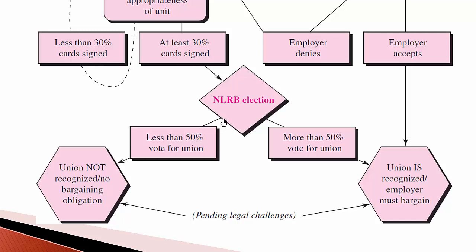There is a 24-hour period before the election in which neither the employer nor the union are allowed to contact employees. If less than 50% of the people vote for the union, the union is not recognized and there is no bargaining obligation on the part of the company. If 50% plus one vote in favor of the union, the union is recognized and the employer must bargain — all pending any legal challenges to the process, which could be filed by the union or the company.